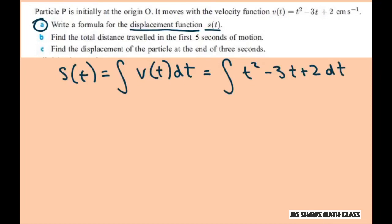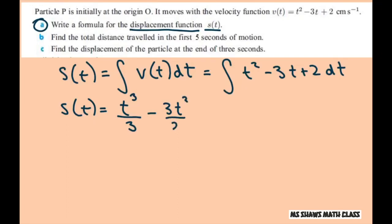You take the anti-derivative of that. Your S of t is going to be t to the power 2+1, so t cubed divided by 3, minus 3t squared — we want that power one higher, so that's squared — you put a 2 there, you put a 2 under here, plus 2t plus C.